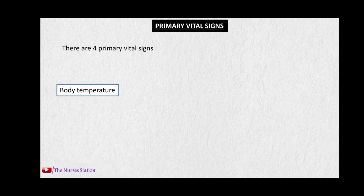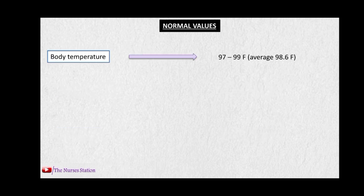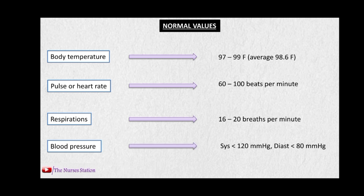There are four primary vital signs: body temperature, pulse or heart rate, respirations, and blood pressure. The normal values are: body temperature 97 to 99 degrees Fahrenheit, average 98.6°F; pulse 60 to 100 beats per minute; respiration 16 to 20 breaths per minute; blood pressure systolic less than 120 mmHg and diastolic less than 80 mmHg.